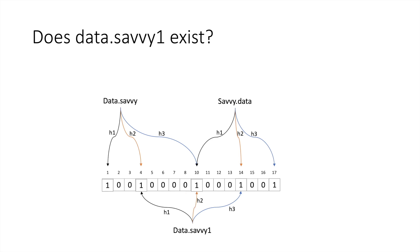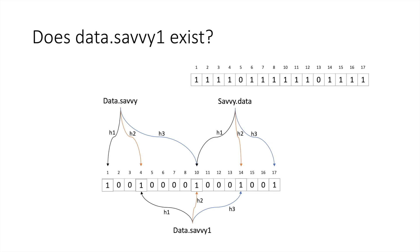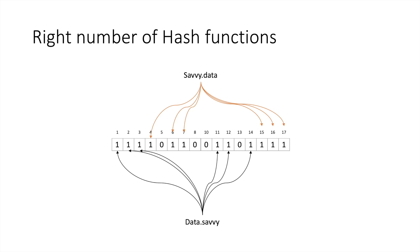Now imagine if h2 was pointing to bit 10 instead of bit 8 — even though data.sevi.one doesn't exist, the system would tell us a lie: a false positive saying the user already exists. This usually happens when most of the bits in the bit array are already set. You need a big enough bit array to store enough records, otherwise you get many false positives. It is also important to have the right number of hash functions. Too many hash functions will set too many bits to 1, filling up the array quickly and causing more false positives.